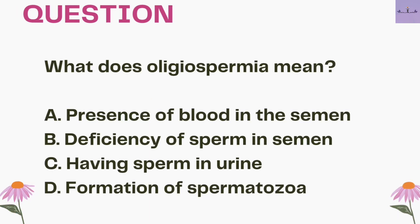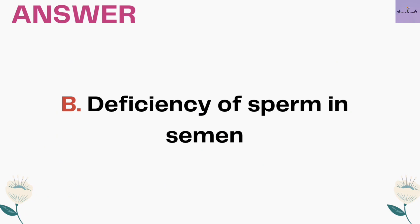Next question: what does oligospermia mean? A. Presence of blood in the semen. B. Deficiency of sperm in semen. C. Having sperm in urine. D. Formation of spermatozoa. Oligospermia = oligo (few or little) + spermia (sperm), so it means deficiency of sperm. The answer is option B, deficiency of sperm in semen.